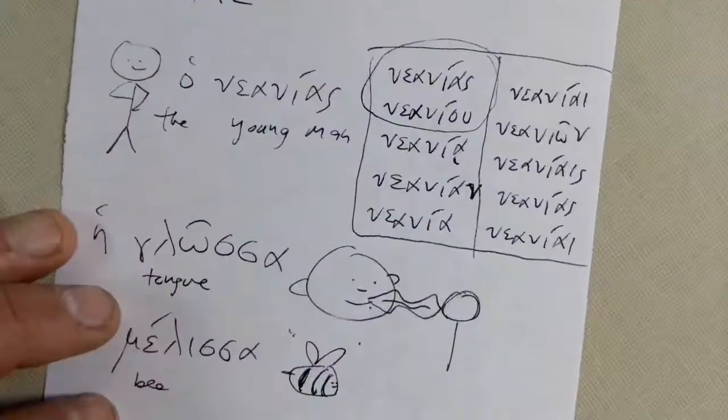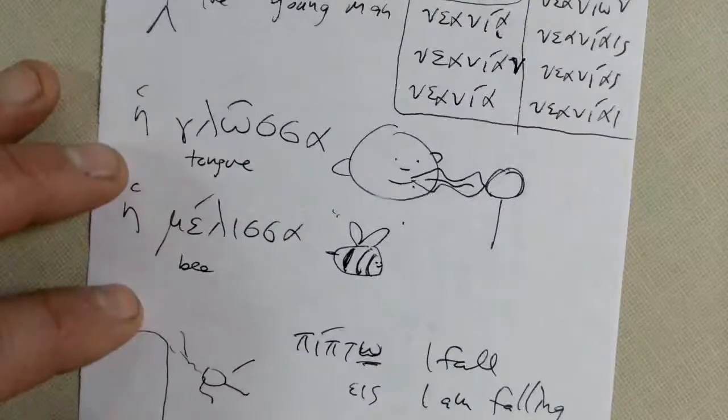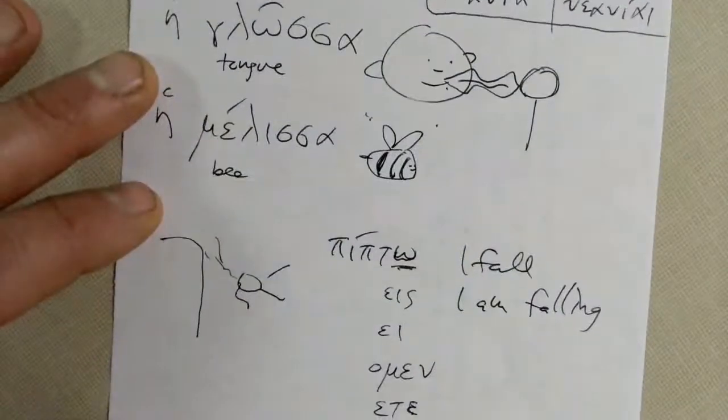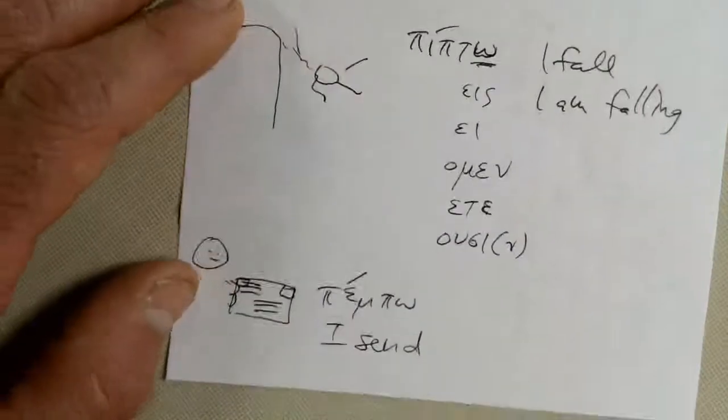Quick review. Nanias, young man. Glossa, tongue. Melissa, bee. Pimpo, I'm falling and Pimpo I send.